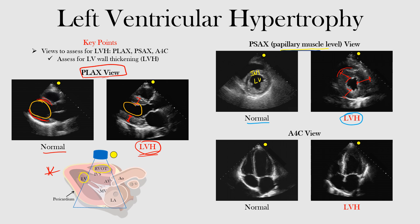In this last view, the apical four-chamber view — go back and listen to the lecture for how to find this view — we can see the left ventricle, the left atrium, the right atrium, and the right ventricle. We're going to focus on the LV. This is the normal left ventricle. And then notice the one that's showing LVH — the thickened left ventricular wall. Notice the difference in those.